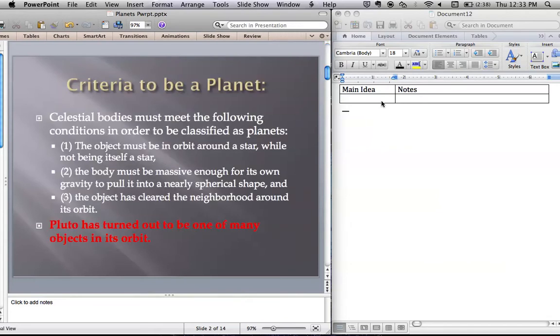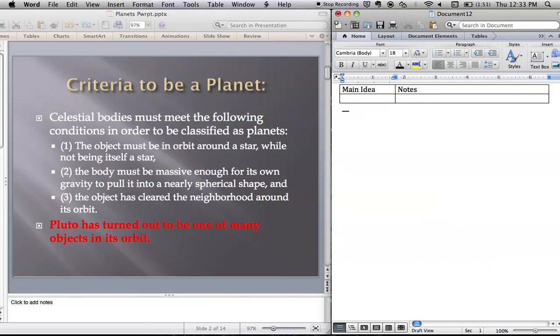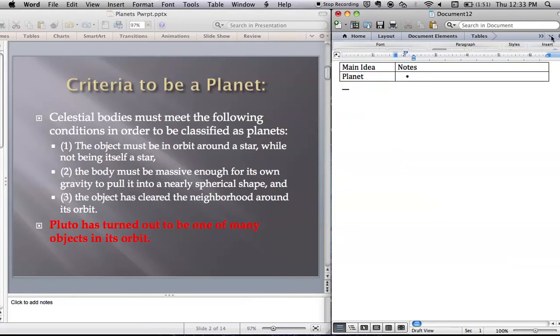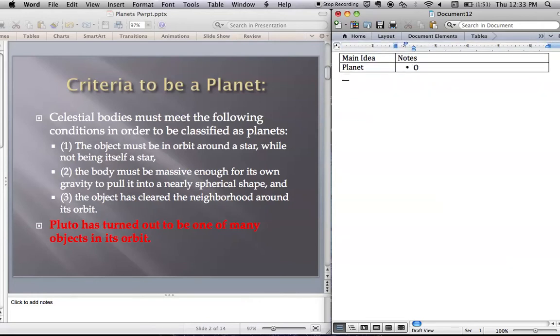First thing is a definition of what it means to be a planet. To be a planet you have to meet all three of these criteria. You have to orbit a star but not be a star yourself. There are some star systems where there are actually two stars that orbit each other. Neither of them would be considered a planet. So an object has to orbit a star but not be a star.